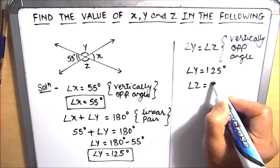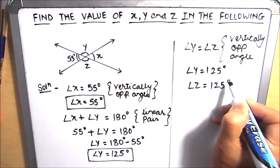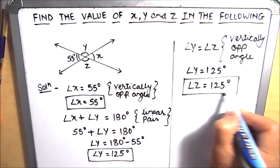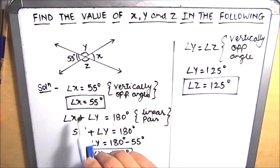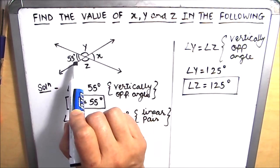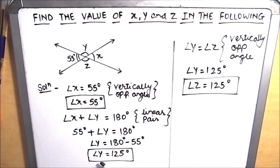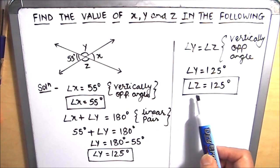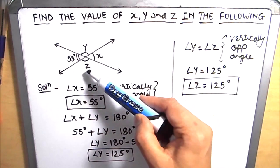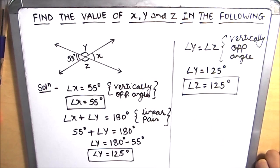So we got the measure of all three angles. Angle x is 55 degrees because it is vertically opposite to the 55-degree angle. Angle y is 125 degrees, and angle z is also 125 degrees because angle y and z are vertically opposite angles. I hope this is helpful to you. Thanks for watching.